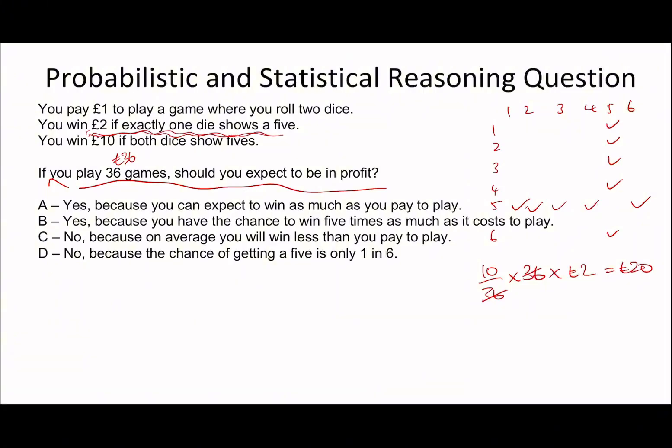You win 10 pounds if both dice show fives. Both dice show fives in just one instance here, which is 1 over 36 times by 36, because 1 over 36 is per go and you play it 36 times, times that by 10, so that becomes 10 pounds. Add these two together, it becomes 30 pounds. Should you expect to be in profit? I'd say you just spent 36 pounds and you're going to win back 30, so no. C is going to be the answer: on average you will win less than you pay to play.